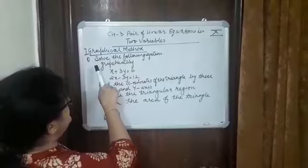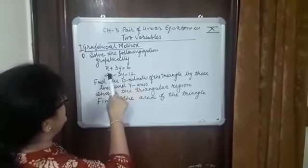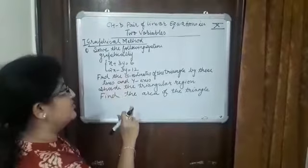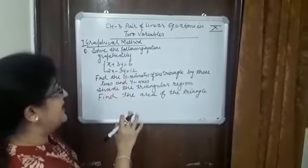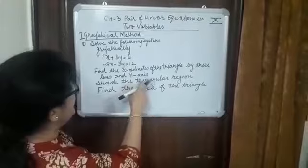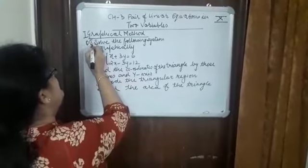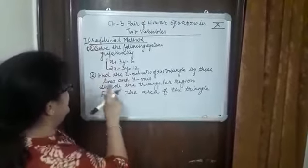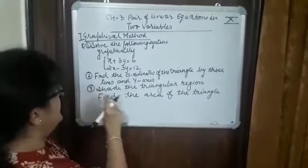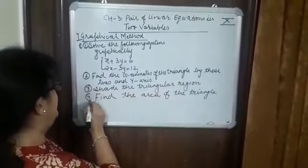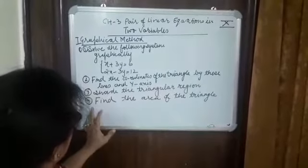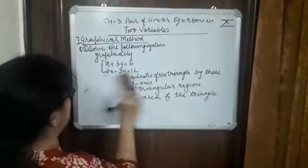Solve the following system of equations graphically: x plus 3y equal to 6, and 2x minus 3y equal to 12. After this, certain types of questions come: find the coordinates of the triangle formed by these lines and y-axis. So our first part would be solution, second part find the coordinates of the triangle formed by these lines and y-axis, third shade the triangular region, and fourth find the area of the triangle so formed.